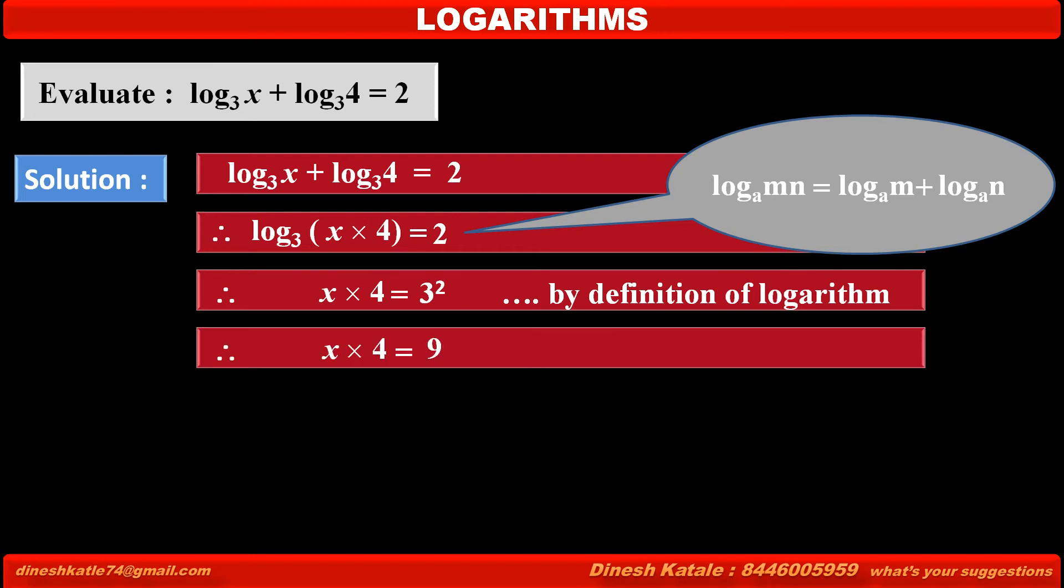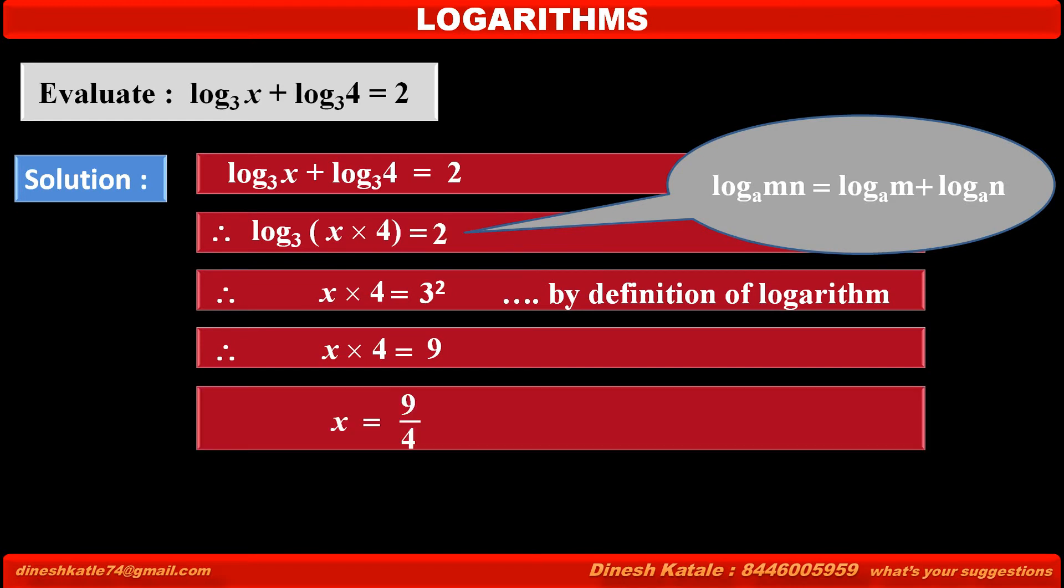Therefore, we get x into 4 is equal to 3 square, that is 9. Therefore, we get x is equal to 9 upon 4.